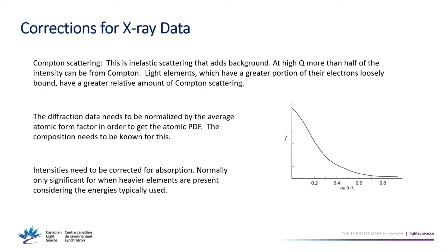For x-ray data there are several corrections needed. First, you must account for Compton scattering — inelastic scattering where x-rays have lost energy after interacting with the sample — which adds significantly to the background at high Q and is a bigger problem with light elements due to their loosely bound electrons. You also need to divide by the atomic form factor to get the atomic PDF, which further amplifies the high-Q region. Additionally, you correct for absorption, which is mainly significant for heavier elements when using high-energy x-rays.